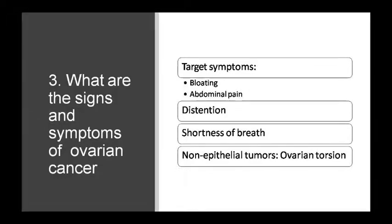What are the signs and symptoms? Symptoms include bloating and abdominal pain, abdominal distension, and shortness of breath. Non-epithelial tumors such as ovarian torsion can also cause pain. Other symptoms include vague abdominal discomfort, dyspepsia, and mild gastrointestinal complaints. As tumor size increases, pressure on tissue leads to increased urinary frequency or constipation. If the tumor is ruptured, torsed, or infected, pain can be found, as well as feminizing or masculinizing effects from secondary cellular types. Secondary ascites and pleural effusion from pulmonary metastasis may also occur.